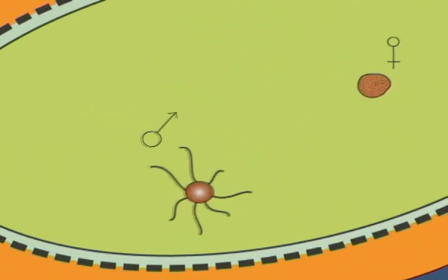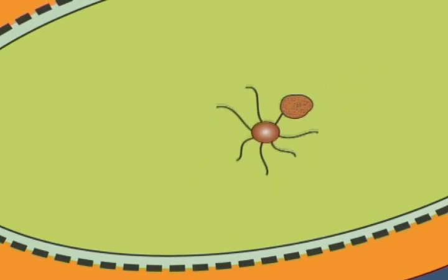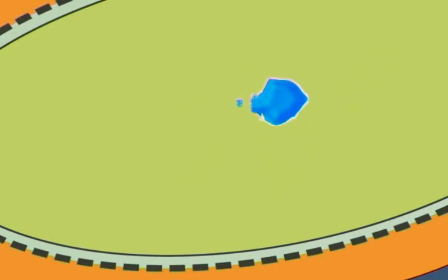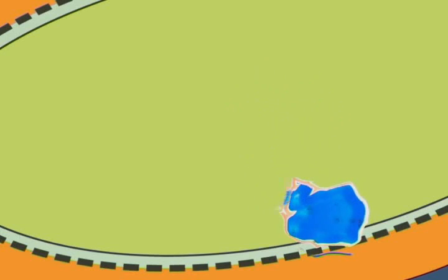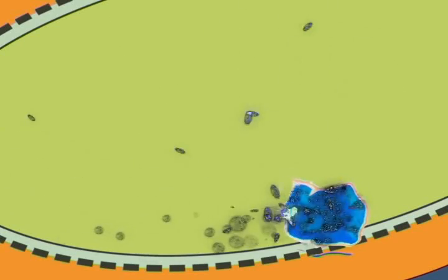A male gamete then fuses with a female to produce a zygote. The zygote enters the wall of the mosquito's gut and develops into an oocyte. The oocyte then multiplies to produce thousands of sporozoites. The sporozoites leave the wall of the gut and migrate to the mosquito's salivary glands.